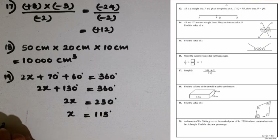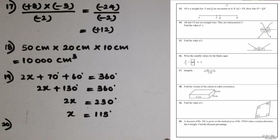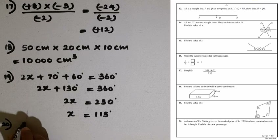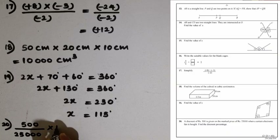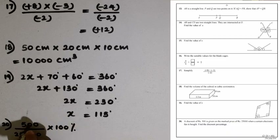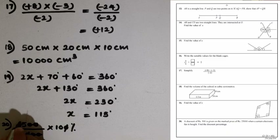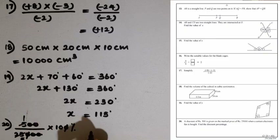Question number 20: a discount of 500 rupees is given on the marked price of 25,000 rupees for an electric fan. Find the discount percentage. The discount is 500 rupees and the marked price is 25,000 rupees. Multiplying by 100% and cancelling zeros: 10 divided by 5 is 2. The discount percentage is 2%.